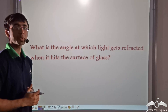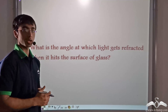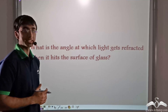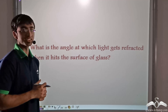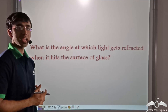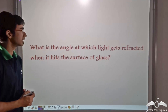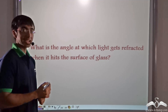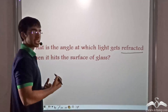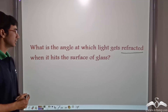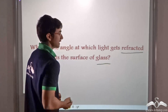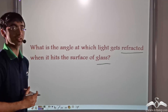We studied that when light travels from one medium to another, that is when light encounters a change in medium, the path of the light changes — it bends. But what do you think is the angle at which the light ray is bending? What do you think is the angle at which light gets refracted when it travels from one medium to another, for example when it hits the surface of glass? Let us find out how we can determine that angle.